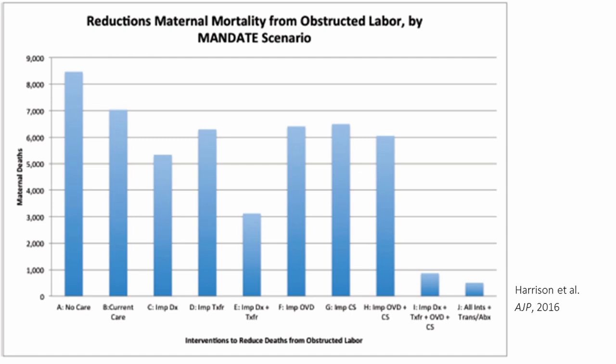This first bar shows the impact of improving diagnosis of dysfunctional labor. In low- and middle-income country settings, we use the partograph to track women's labor and ensure they're making appropriate progress. If we improved diagnosis by increasing training with the partograph and its availability, we see this drop in maternal mortality. Looking just at transfers — the ability to move women from home and clinic settings to hospitals — that accounts for this additional drop. Combining these first two interventions, we see about a 50% drop in maternal mortality from obstructed labor.